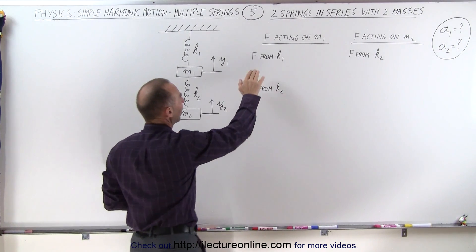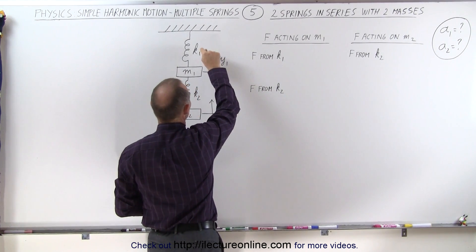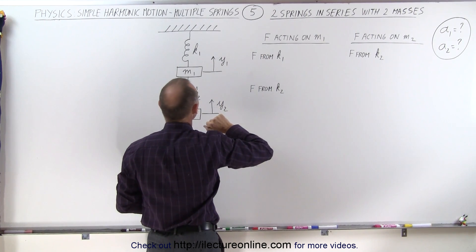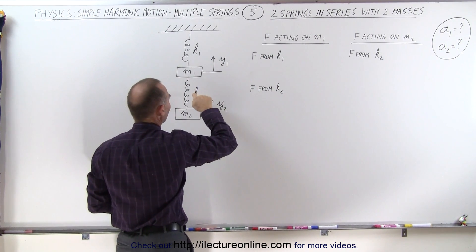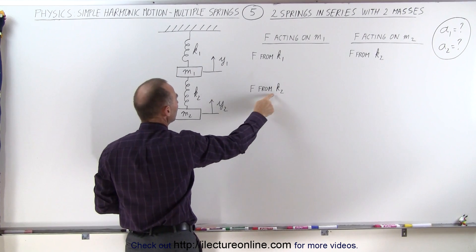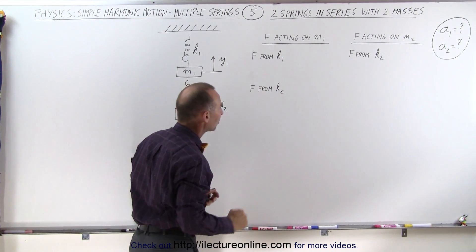Which means we're going to find the force that comes from the first spring here with the spring constant k1. And we're going to have to find the force acting on m1 due to the second spring with the spring constant k2.